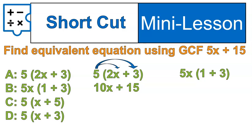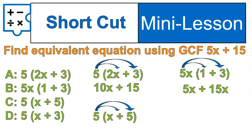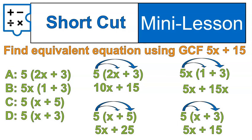5 times 2x is 10x, so that's 10x plus 15 because 5 times 3 is 15. Then I'd move on to the next one. 5x times 1 is 5x. 5x times 3 is 15x. Notice that 5x on the outside means I have to multiply x times each term inside the parentheses, so that one's definitely not right. Let's try this one out. 5 times the quantity of x plus 5. When I multiply that in, I'll get 5x and 25, and then this one actually is the correct answer where I'll get 5x plus 15.